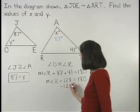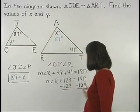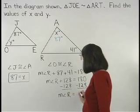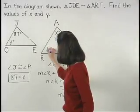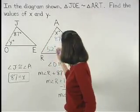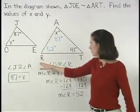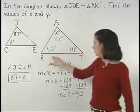And subtracting 128 from both sides, we find that the measure of angle R is 52 degrees. And remember that angle O is congruent to angle R, so Y equals 52.